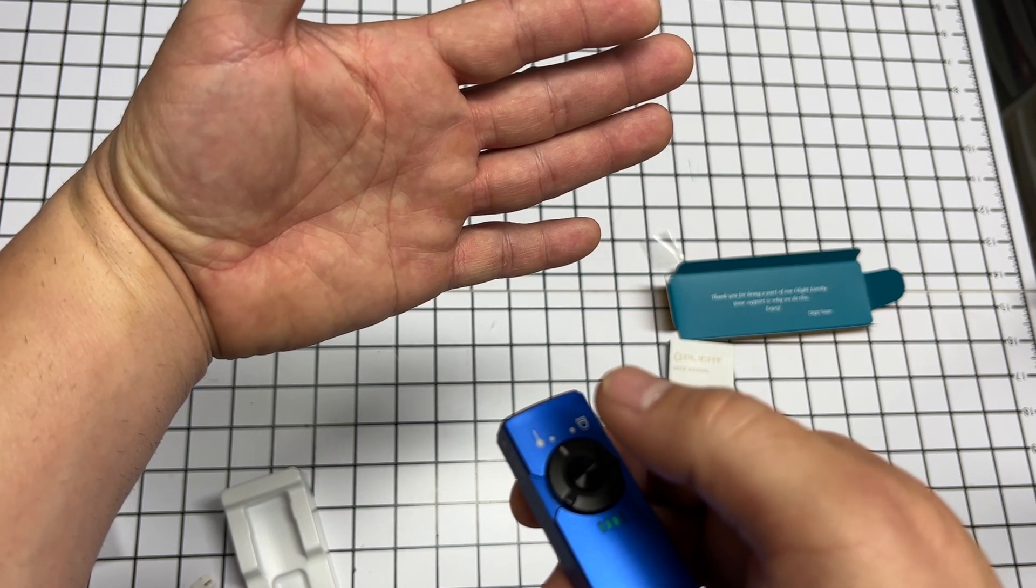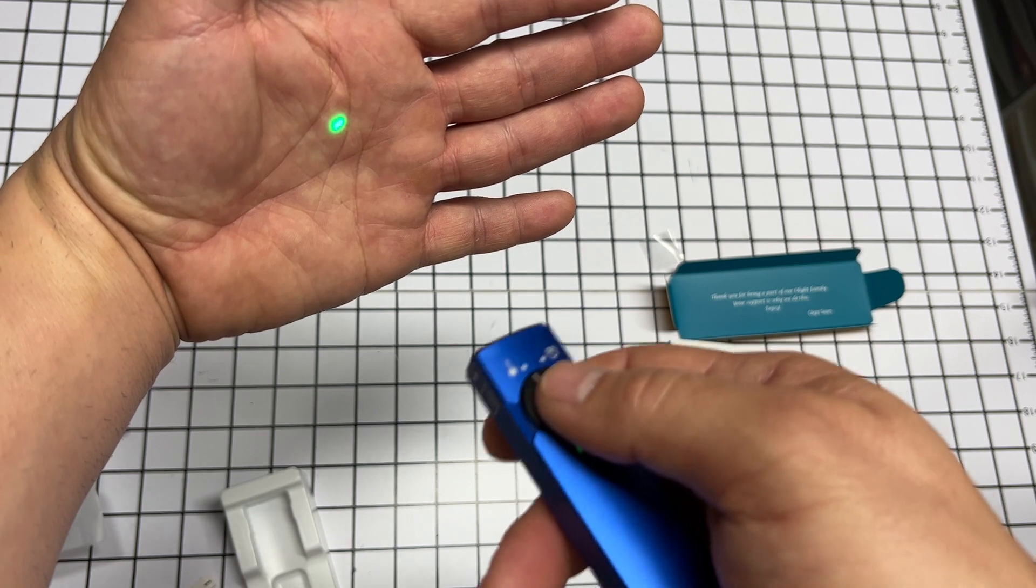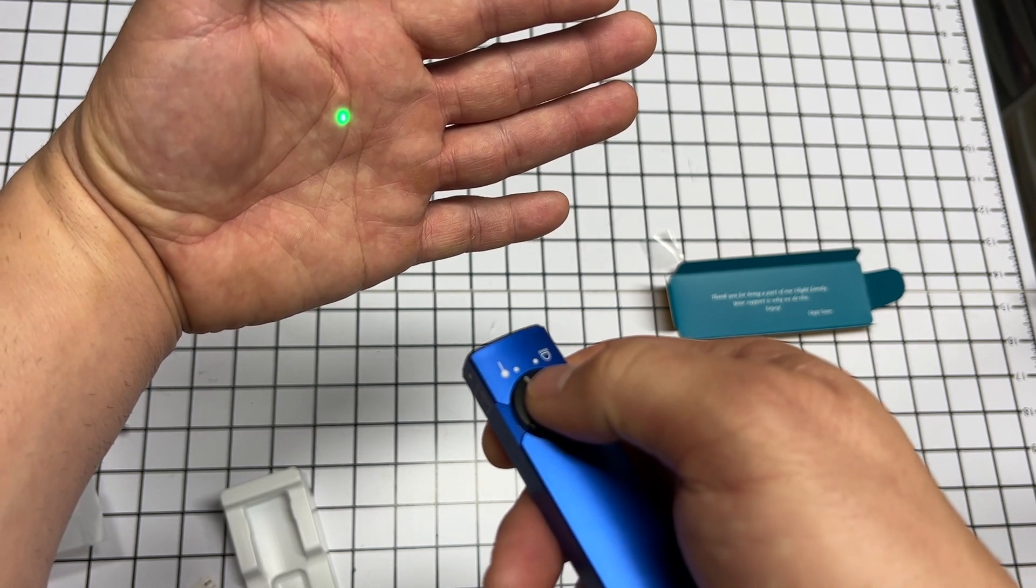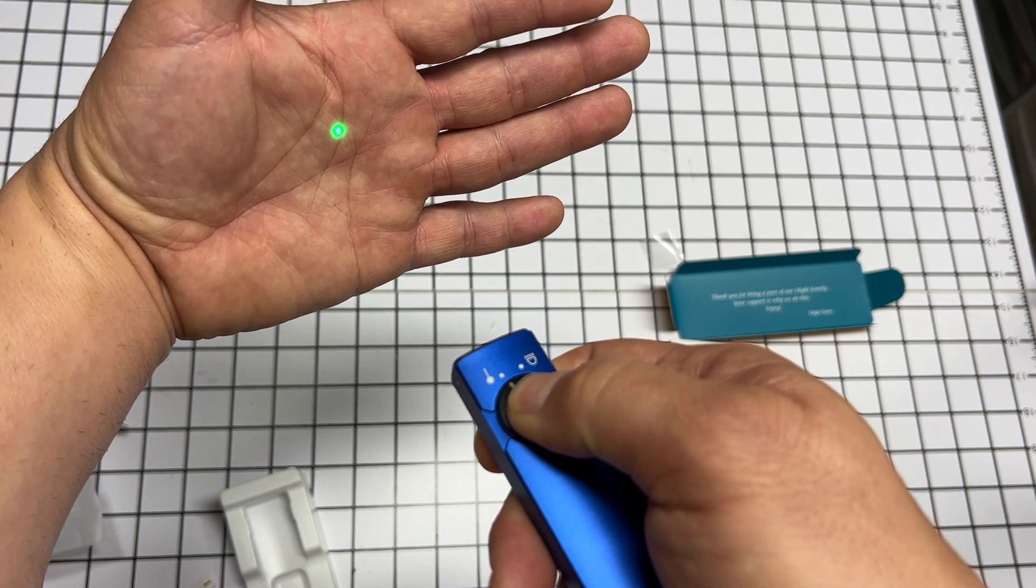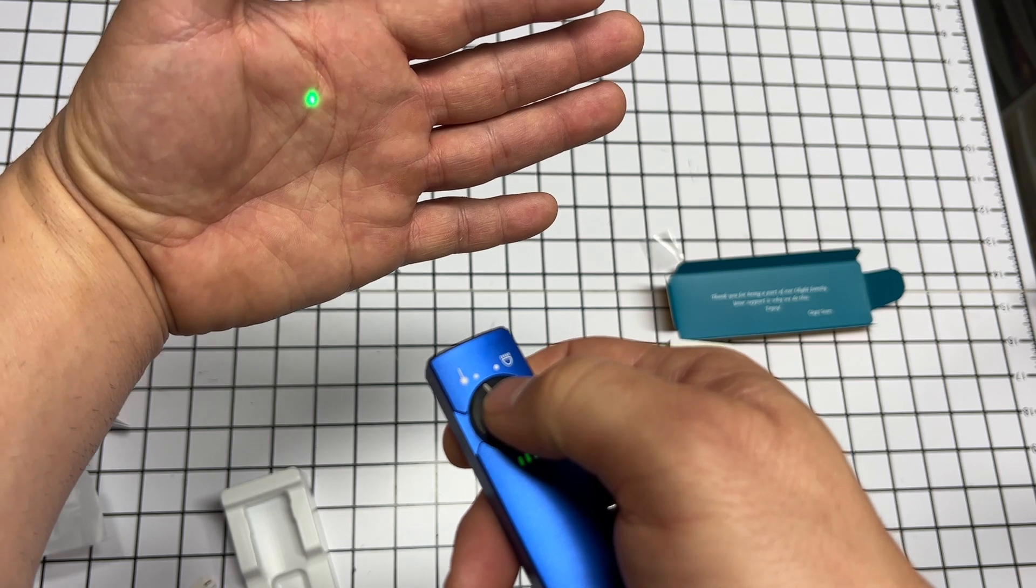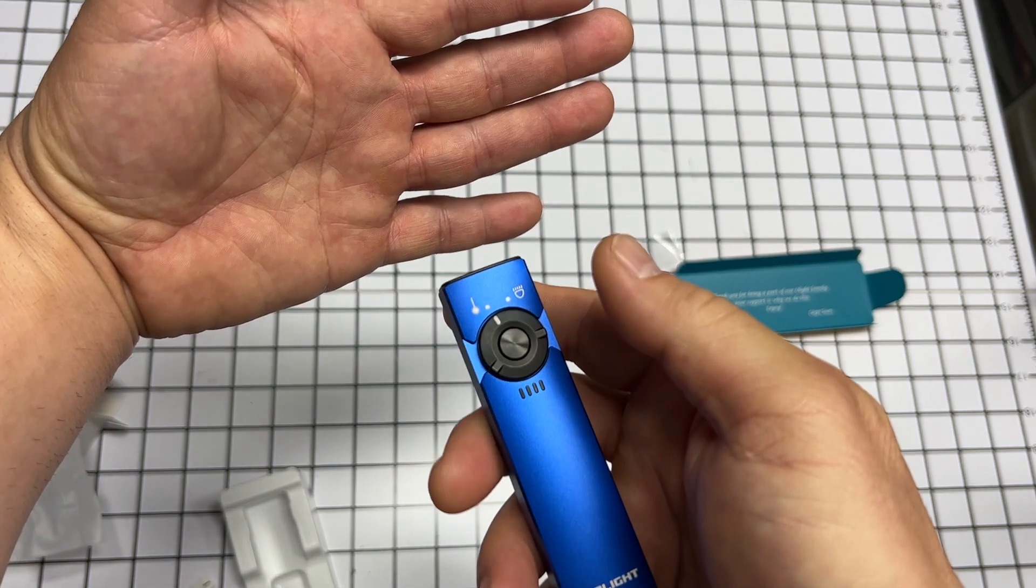But let's say this is in your pocket and somehow your finger taps it - it's going to turn on. So in order to lock it so that it doesn't turn on accidentally, all you got to do is just hold it for another second and now it's locked.